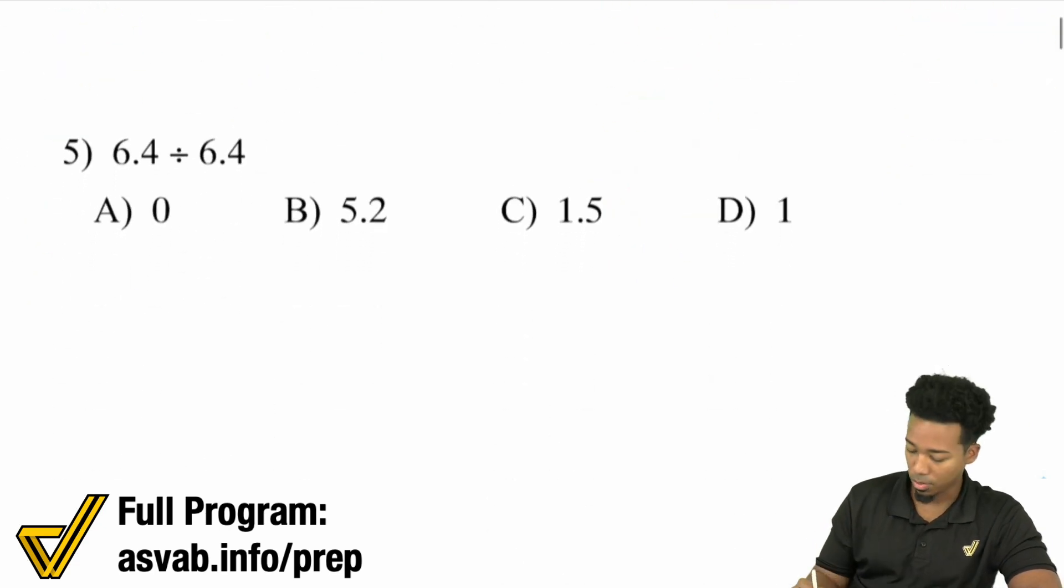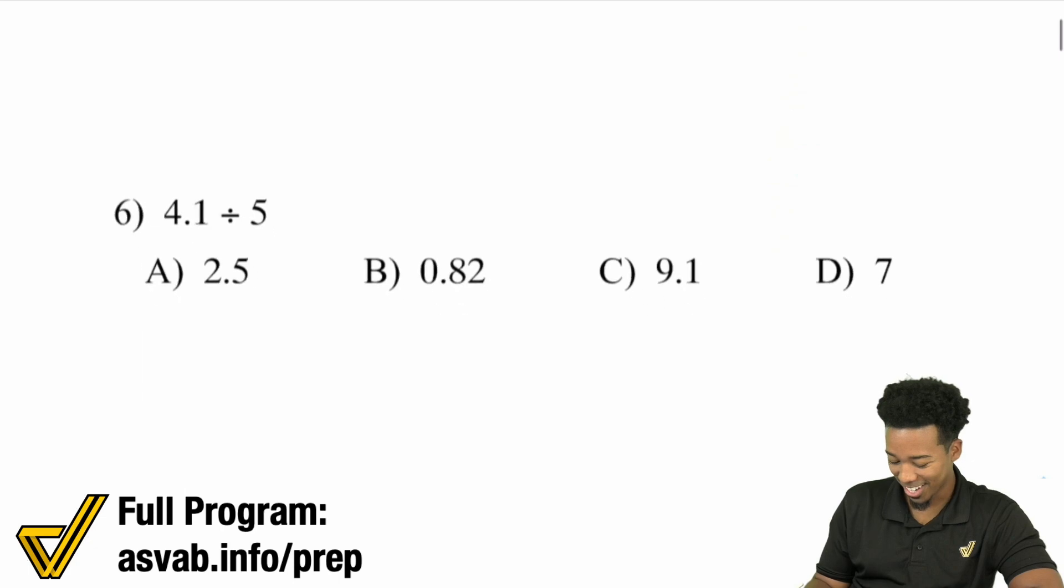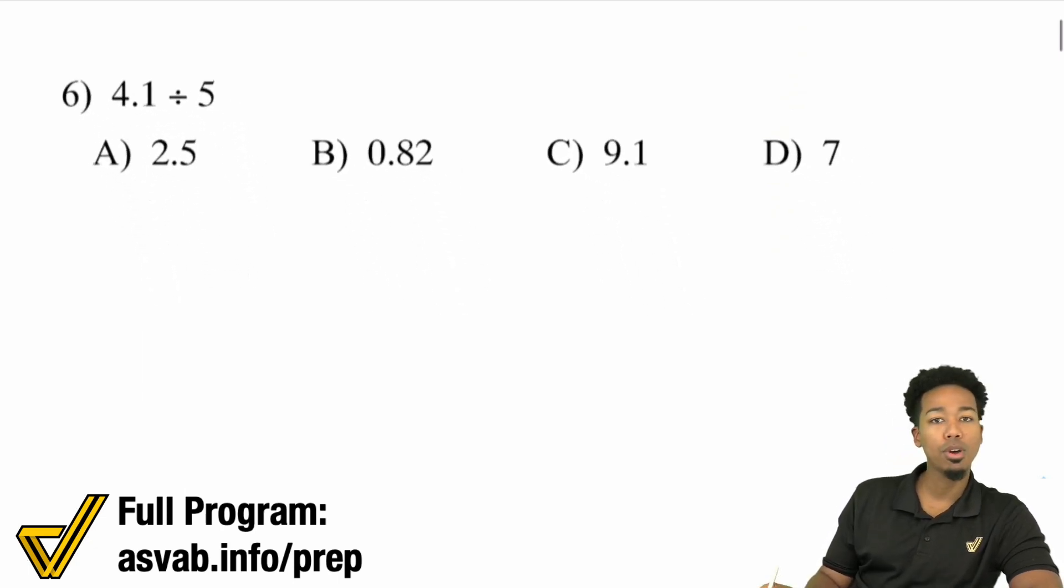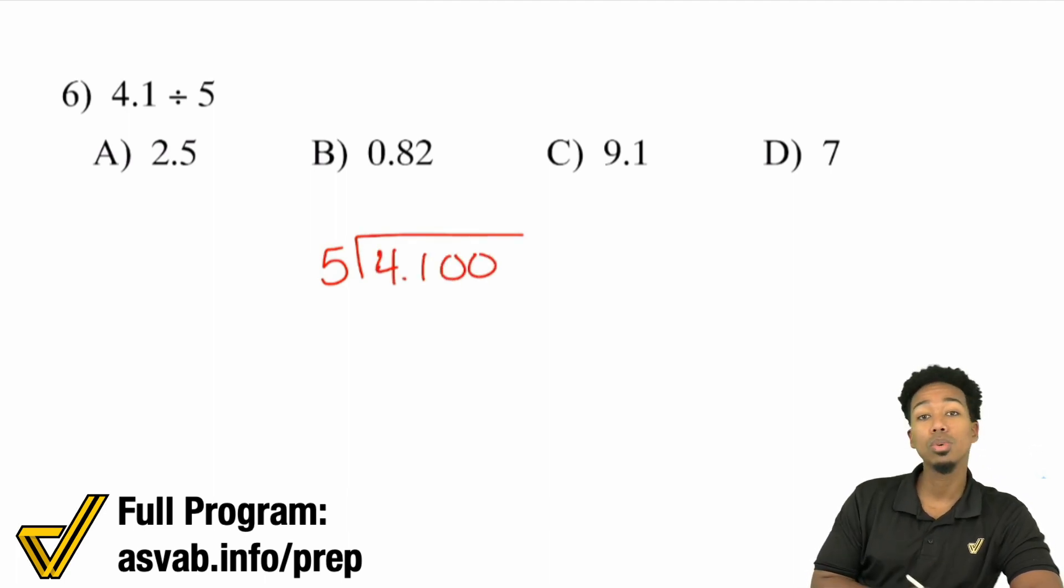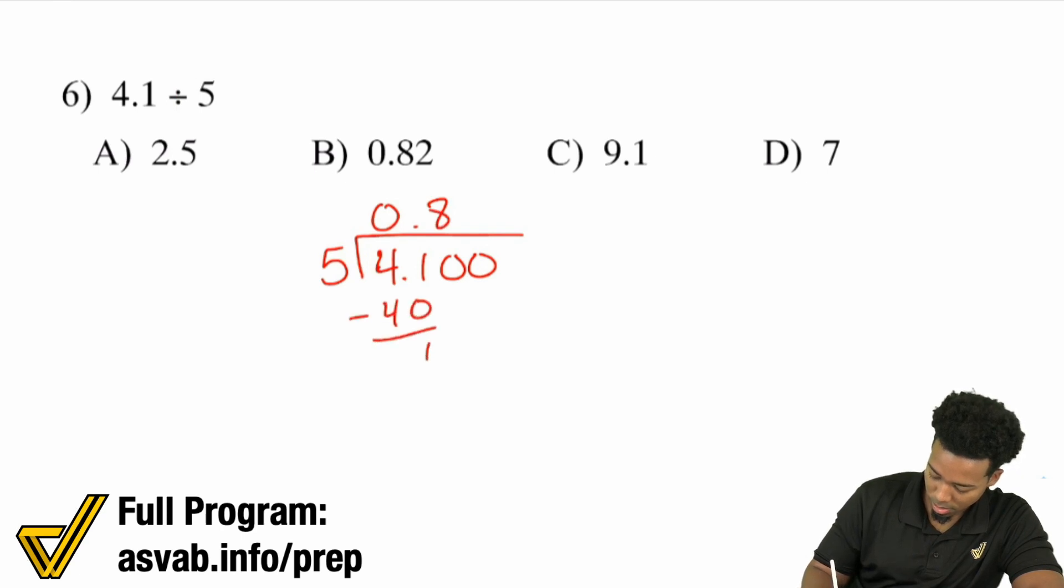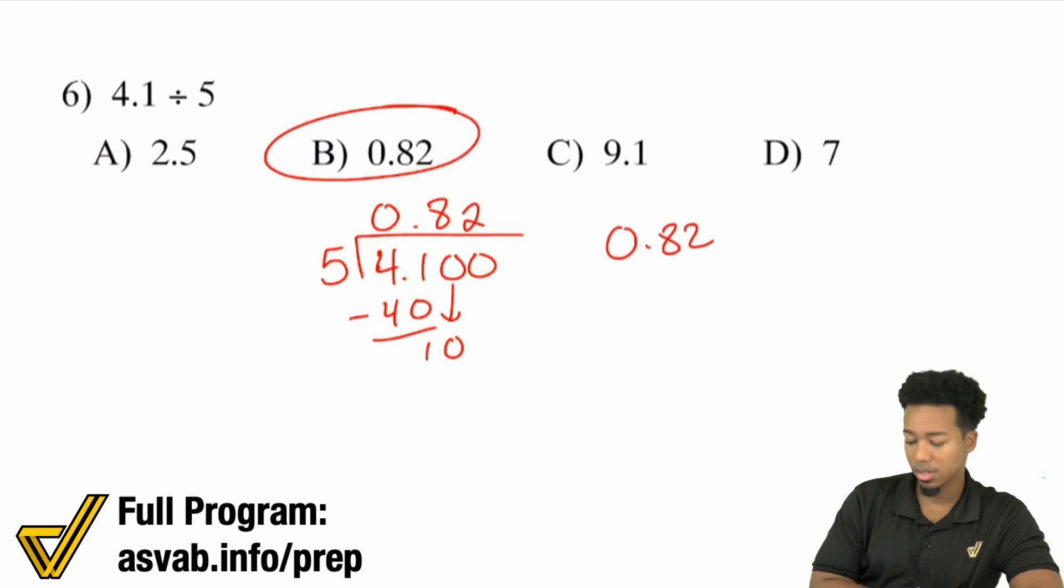Let me show you some more examples. This one's going to be 1. Anything divided by itself is 1. So number 6, we have 4.1 divided by 5. Do I need to do that decimal trick? No, not at all. You can straight up start right here. 5 goes into 4.1. Remember, the number you're dividing by can't be a decimal. If it's not a decimal, start dividing. 5 goes into 4, 0 times. 5 goes into 41, 8 times. 5 goes into 10, twice. 0.82. There it is.